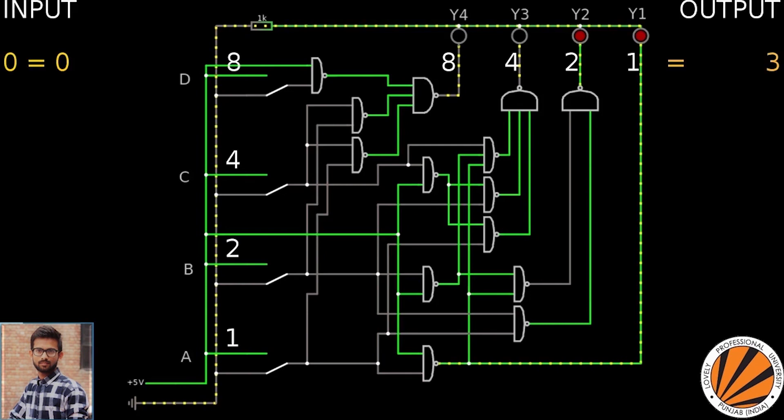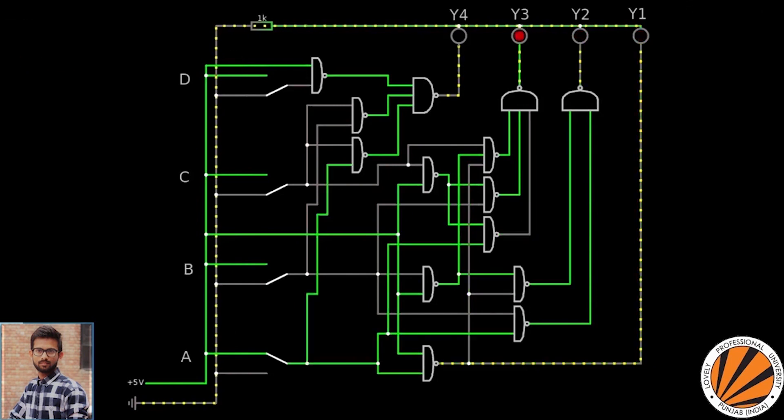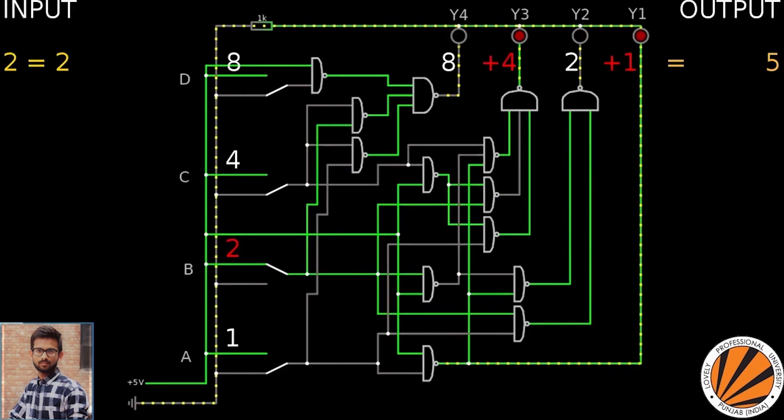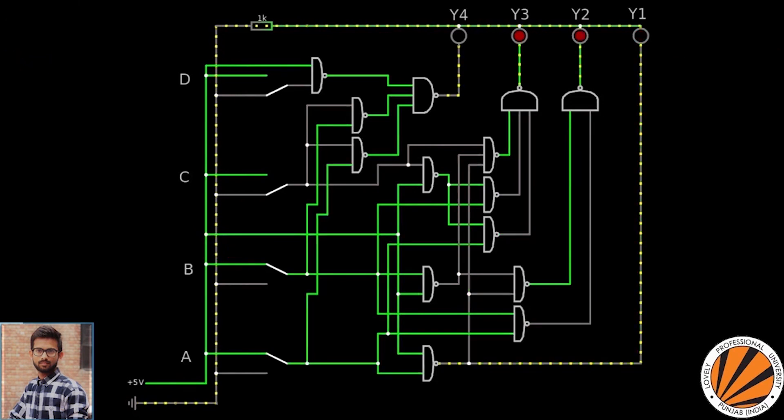Now we are going to see the execution with inputs and getting the outputs. When we give input 1, the Excess-3 Code Converter output is 4, that is 1 plus 3 equals 4. When we give input 2, the output is 5, that is 2 plus 3 equals 5.